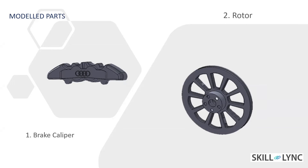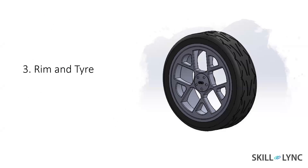The next part is the rim and tire, which are integrated together in the model. The wheel is a circular object capable of turning on an axle. The tire is a ring-shaped component that surrounds the wheel rim to transfer load from the axle to the ground. Boss Extrude, Cut Extrude, Circular Pattern, Dome, and Revolve features were used to model this part.